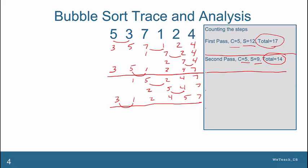Clearly the three and the one need to swap. So one, three, two, four, five and seven. The three and the two need to swap. But the rest of the list is fine. So we finished that pass. That wasn't too bad.